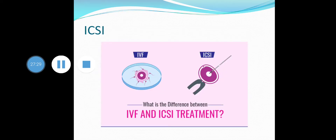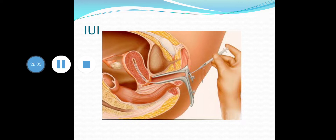ICSI — intra-cytoplasmic sperm injection — has little difference from in vitro fertilization. In ICSI, the sperm is directly injected into the cytoplasm of the egg. It is a modified IVF technique in which the sperm does not have to naturally penetrate the egg. IUI — intrauterine insemination — is a technique in which semen is injected into the uterus or female reproductive tract artificially.